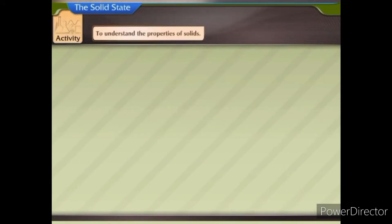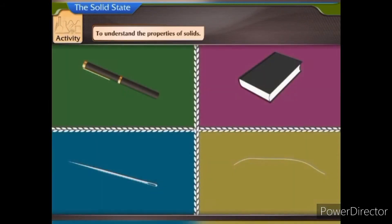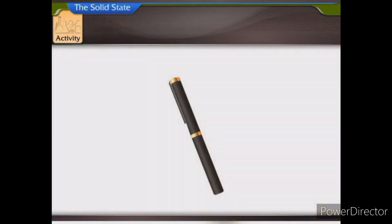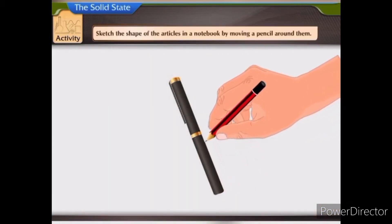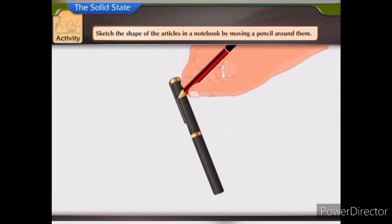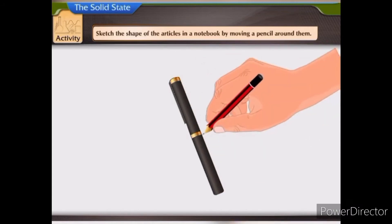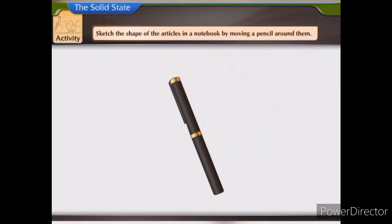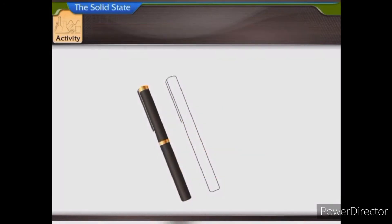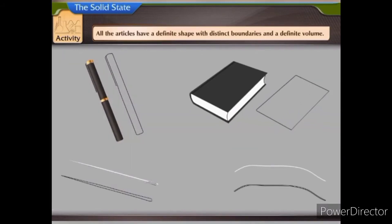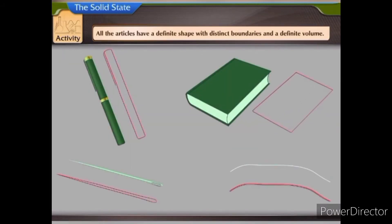Let us perform an activity to understand the properties of solids. Collect the following articles and perform the given actions on them: a pen, a book, a needle, a piece of thread, etc. First, sketch the shape of these articles in a notebook by moving a pencil around them. Notice that all these articles have a definite shape with distinct boundaries and a definite volume.